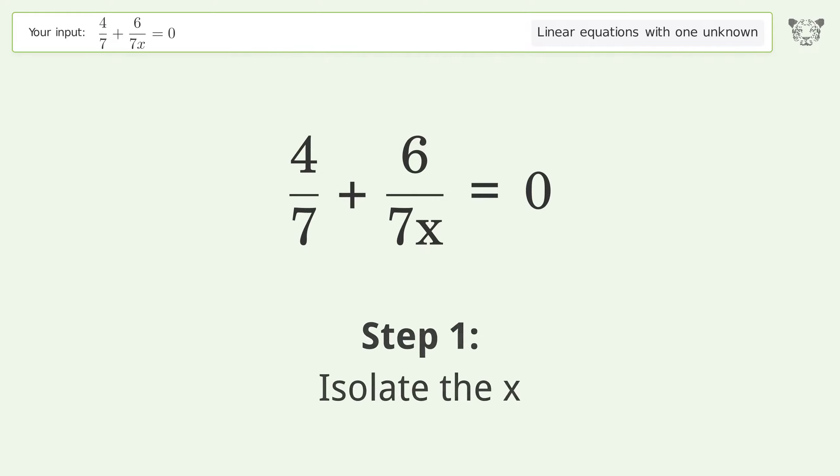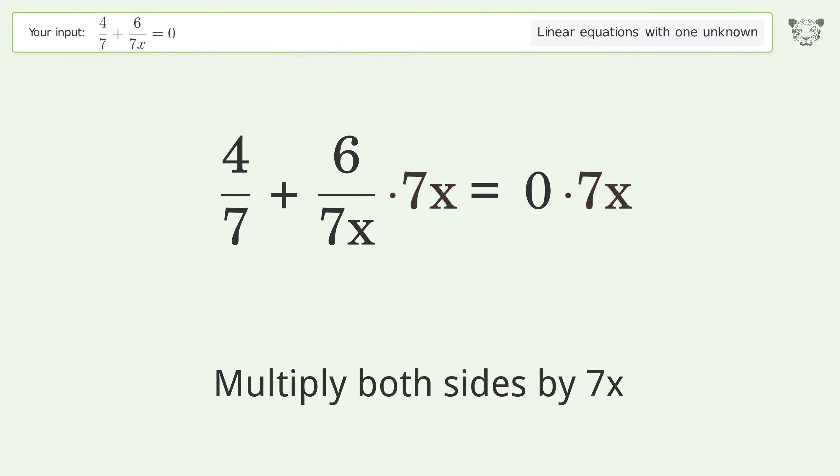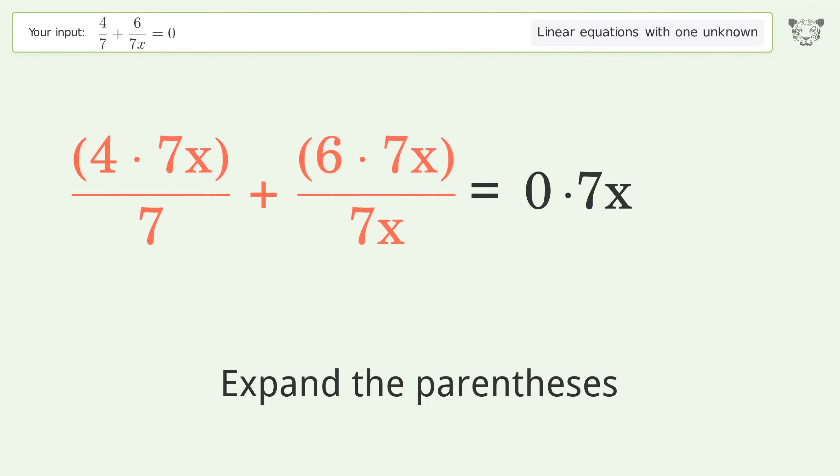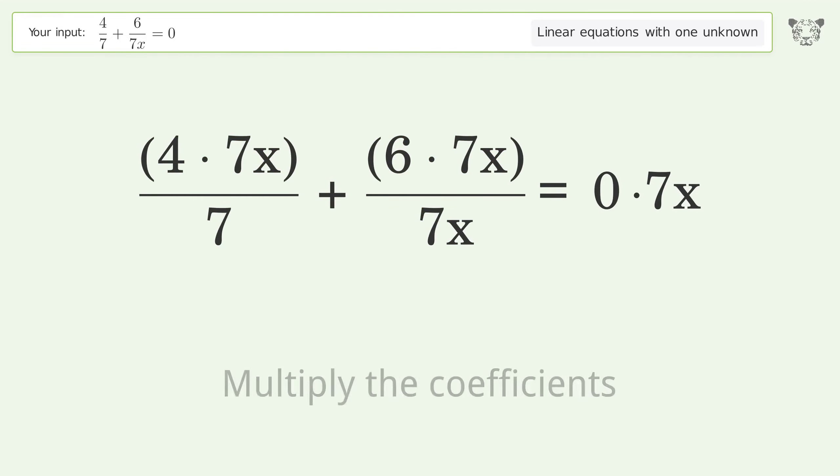Isolate the x. Multiply both sides by 7x. Expand the parentheses. Multiply the coefficients.